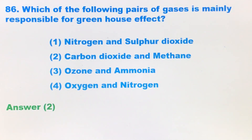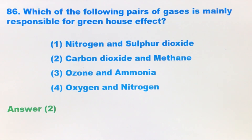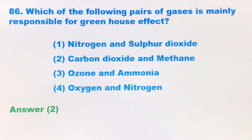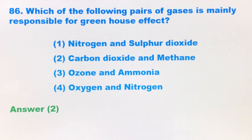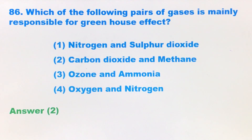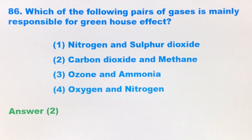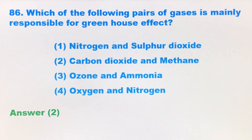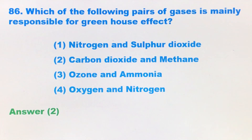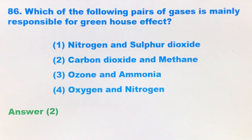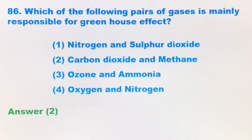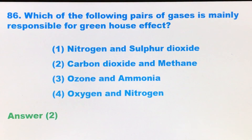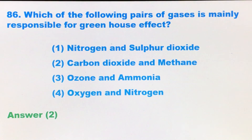Question number 86: Which of the following passive gases is mainly responsible for the greenhouse effect? The first option is nitrogen and sulfur dioxide. Second, carbon dioxide and methane. Third, ozone and ammonia. Fourth, oxygen and nitrogen.